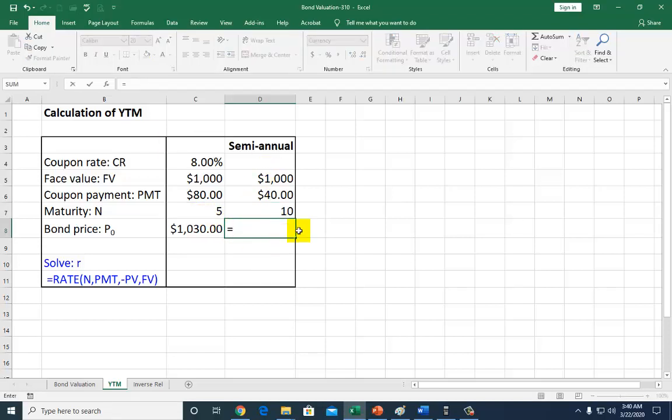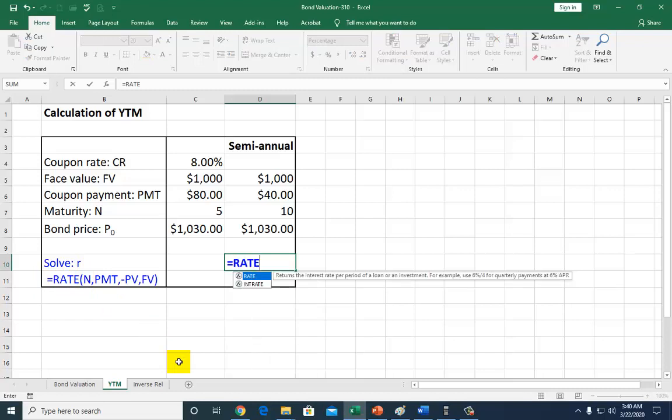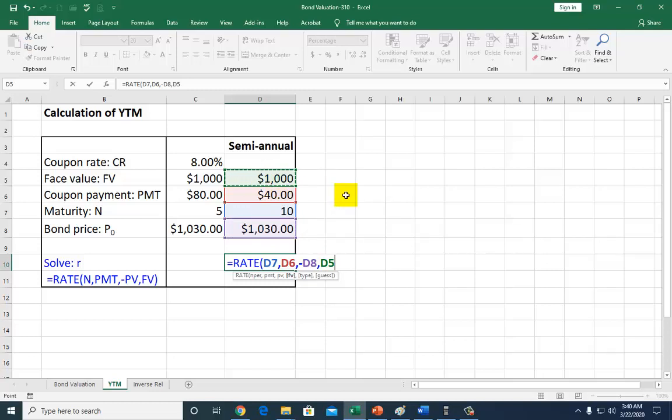And, of course, the price right now equal is the same, 1,030. So now, let's come here and solve for the rate. Looking at this, my little cheat sheet here. So, equal, rate, open parenthesis. And it's going to be N, the number of periods. Click on it, comma, and then payment. You click on this 40, comma, and then PV, which is the price. And make sure you type negative before you click on it so you have a nice little result. And then, comma, and then click on your future value, which is the face value of the bond. So, close parenthesis. And that's what you have.